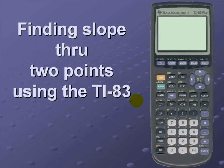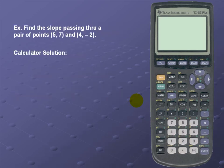Find the slope passing through two points using the TI-83. Find the slope that passes through a pair of points (5, 7) and (4, -2).